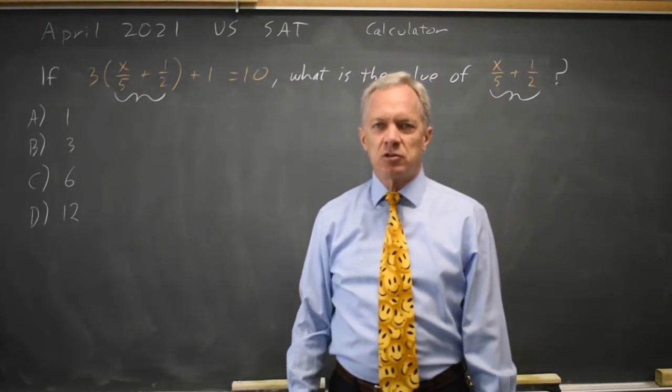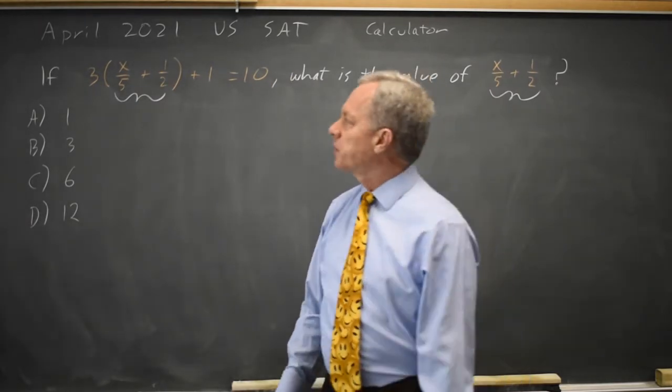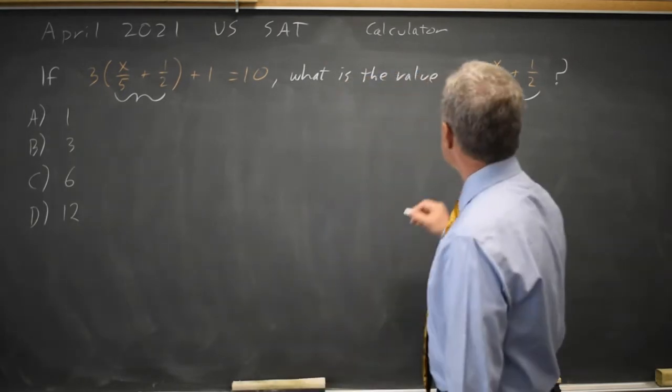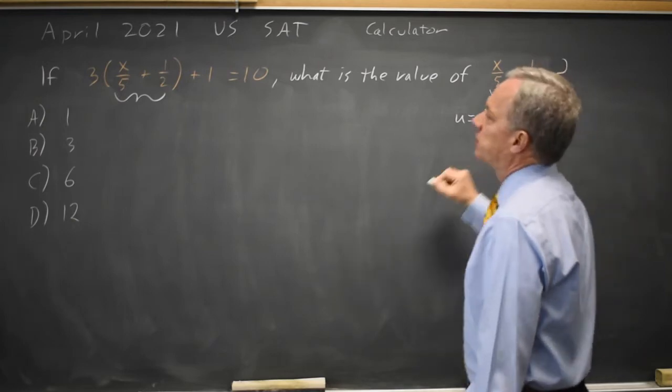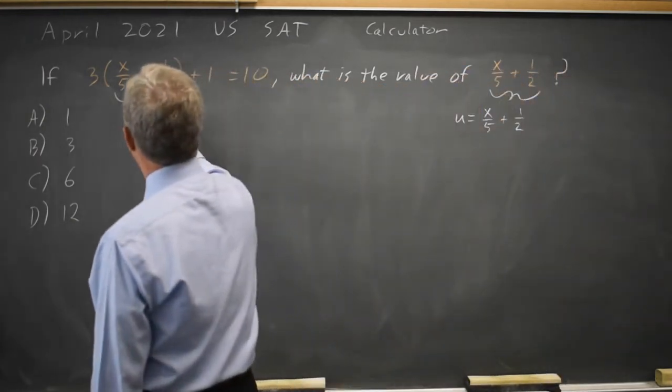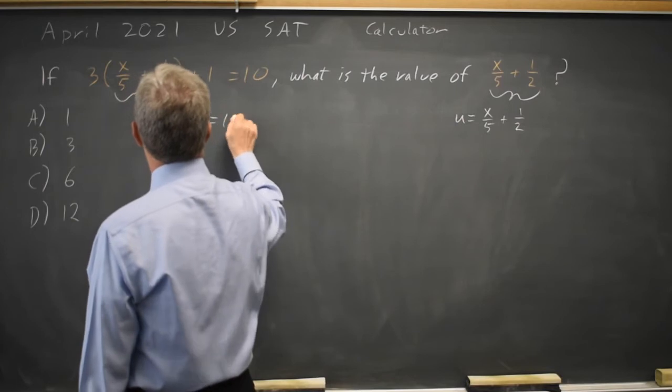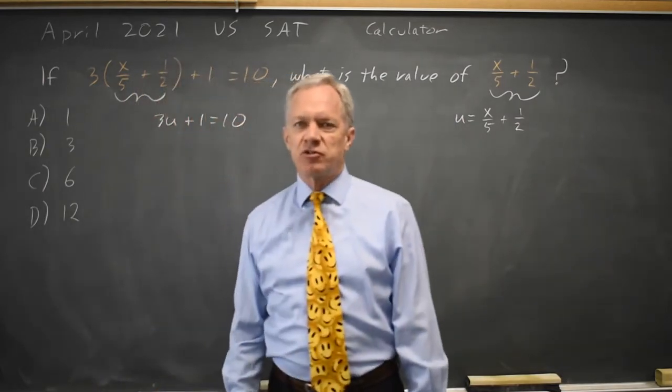So we can group solve for that, or we can do what I like to call u-substitution. If I say u equals x over 5 plus 1 half, then this equation is 3u plus 1 equals 10, and they're asking us to solve for u.